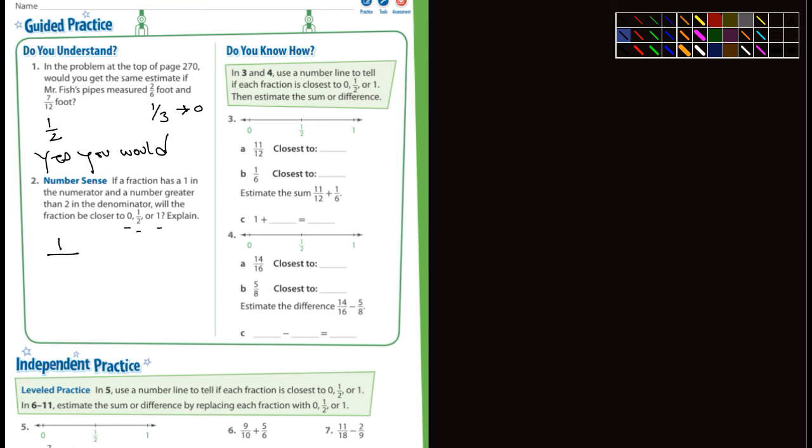Will the fraction be closer to zero, one-half, or one? Well, let's try some. How about five, one-fifth, how about one-tenth, okay? The larger the denominator, the smaller the number. The smaller, the closer it's going to be to zero. So, you can put that in your own words. The larger the denominator, the smaller the fraction, okay? I mean, so look, for example,